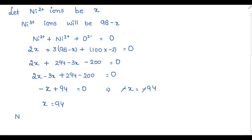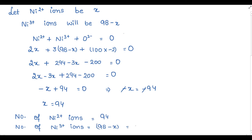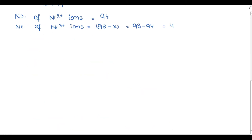Therefore, the number of Ni²⁺ positive ions equals 94, and the number of Ni³⁺ positive ions equals 98 minus 94, which is 4. The percentage of Ni²⁺ positive ions equals 94 divided by the total number of nickel ions (98), multiplied by 100. That gives 94 divided by 98, which equals approximately 95.9%, roughly 96%.